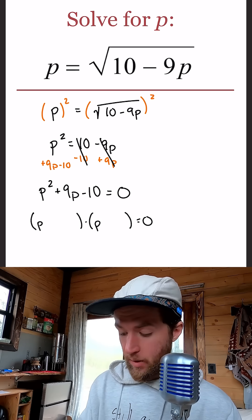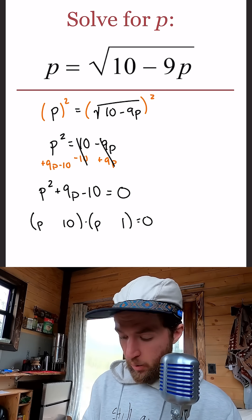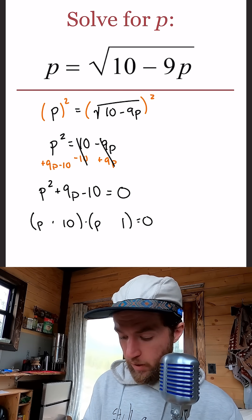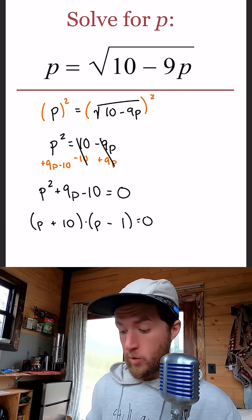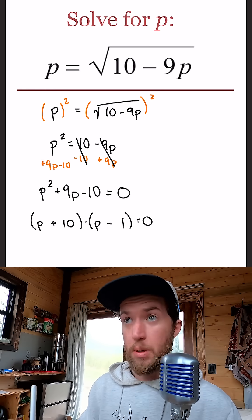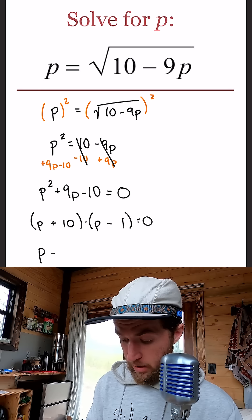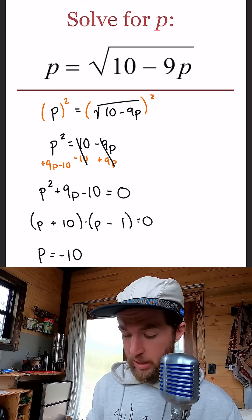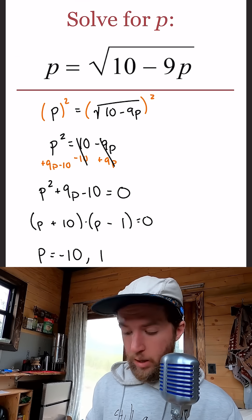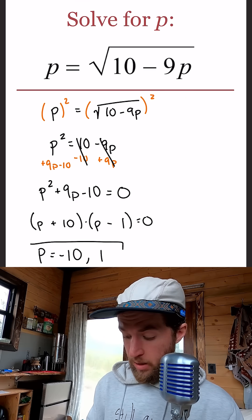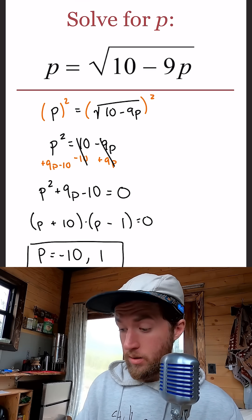So it's going to be a 10 and a 1. It's positive 9, so we'll have positive 10 minus 1. So the two P values that will give us a 0 is a P of negative 10 because negative 10 plus 10 is 0, and a P of positive 1 because 1 minus 1 is 0. So those are our two potential answers. Let's go check them.